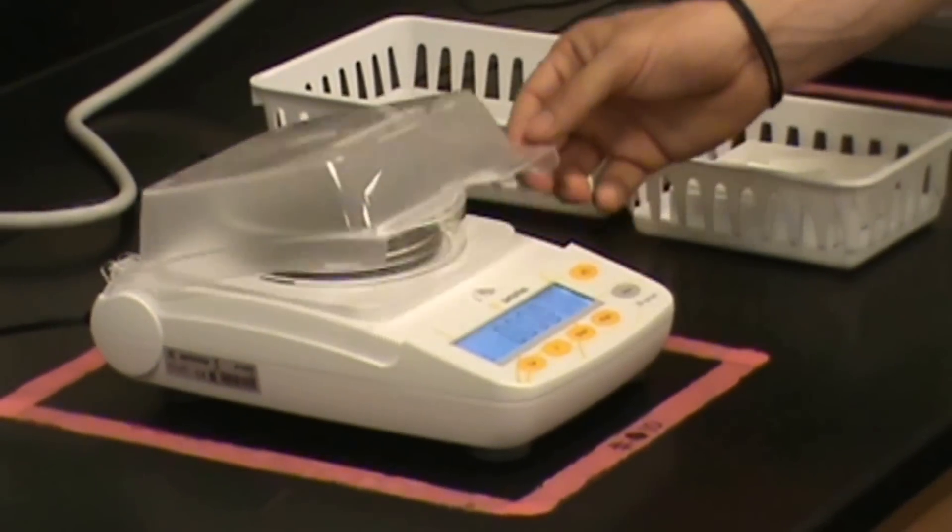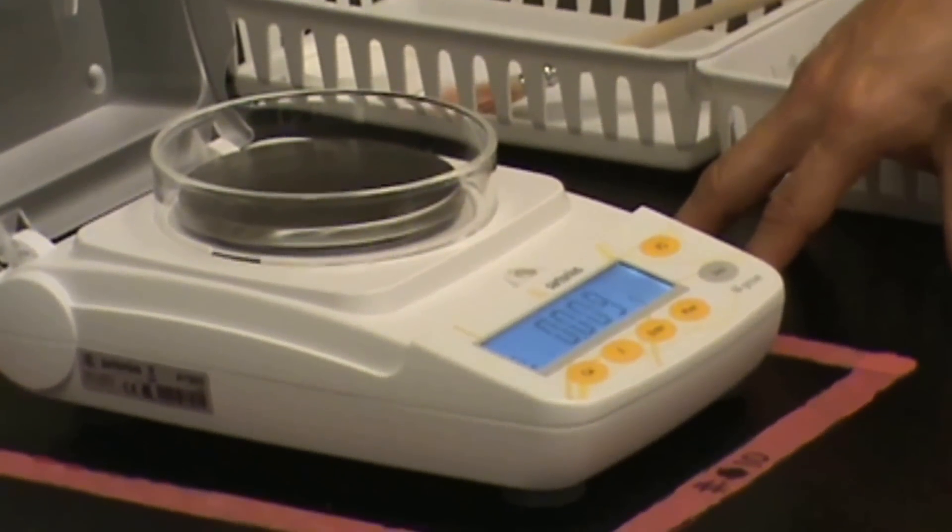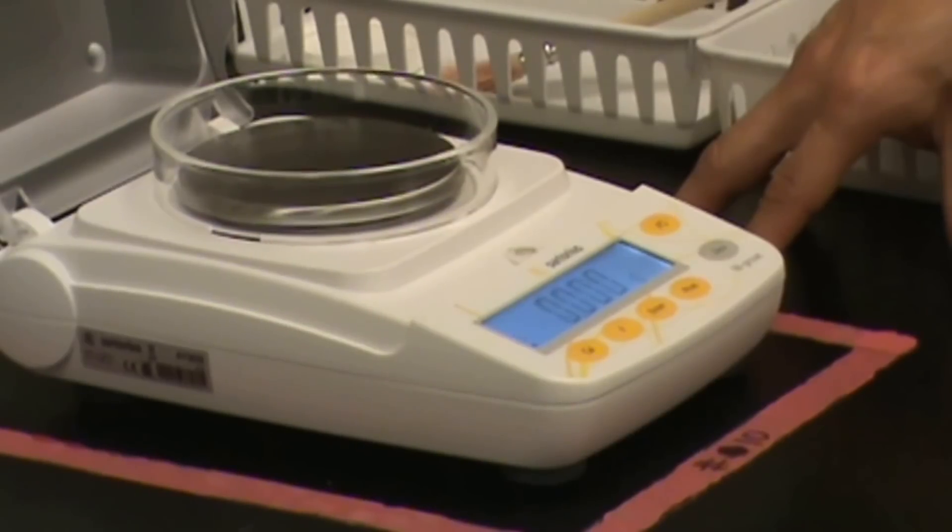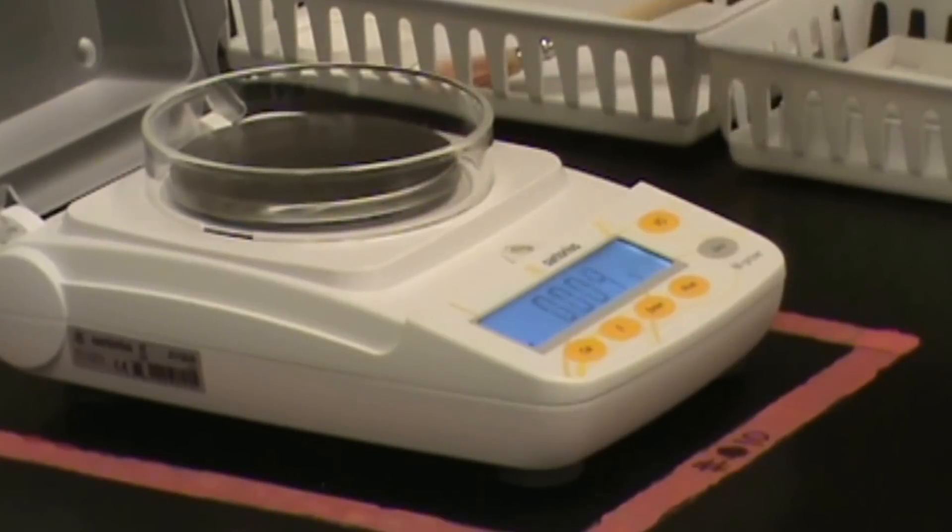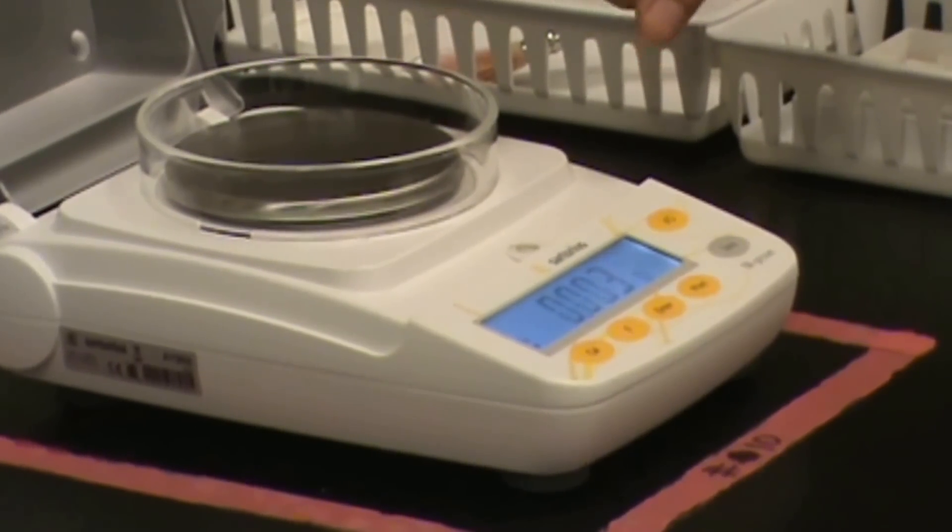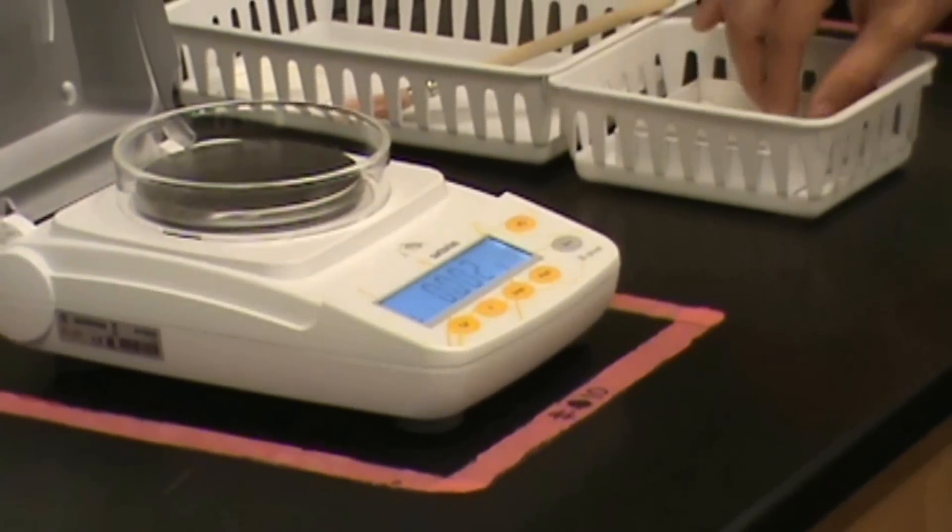I'm going to now open the wind cover right here to reveal the pan of the balance. A very important thing to remember when using a balance is that you never want to put chemicals directly onto the pan. You always want to use some sort of surface or container between the chemicals and the pan of the balance.